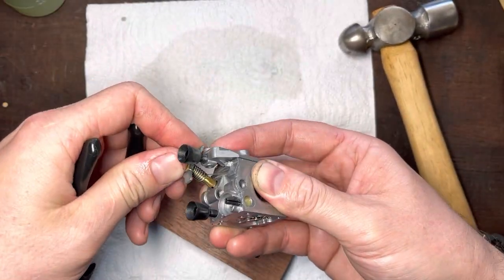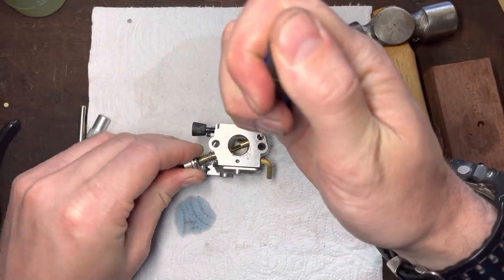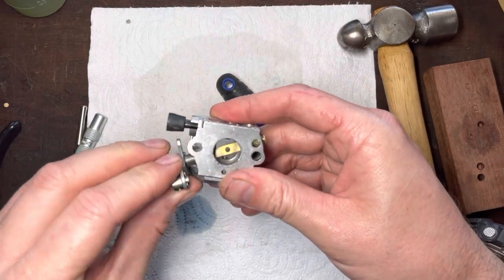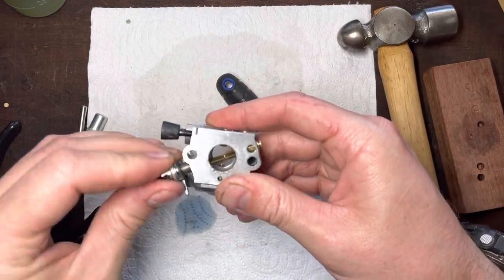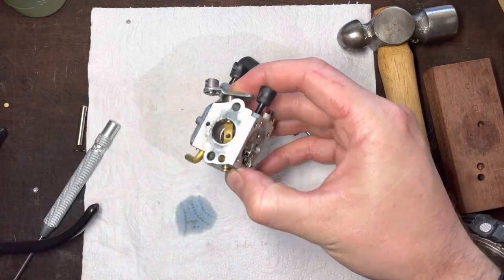Slip the shaft back in and reseat the springs how they came out. Hold the plunger down with the pick and wobble the shaft in and it will just pop straight in. Push it across and slip in the circlip behind it.